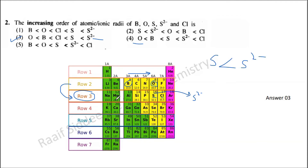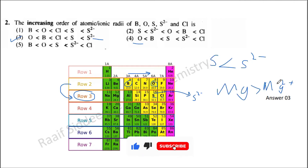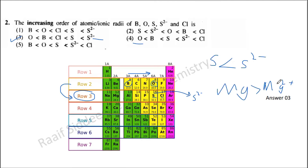For cations, it works the other way. Take magnesium compared to Mg²⁺: two electrons have been removed, so the shielding parameter decreases and the effective nuclear charge increases, meaning the radius decreases. So when considering atomic or ionic radii, three factors are mainly considered: charge, size, and the shielding parameter — also called the screening effect.